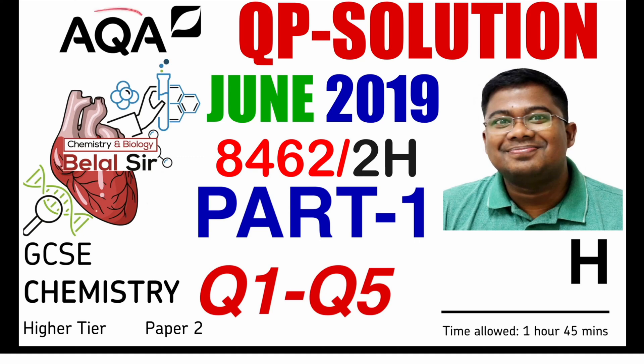Hello everyone, today we're going to be solving AQA GCSE chemistry higher tier paper 2. Today we're going to be solving June 2019 part 1 from question number 1 to question number 5.